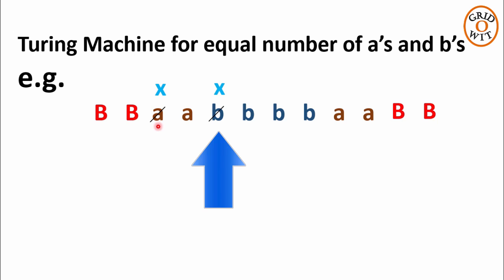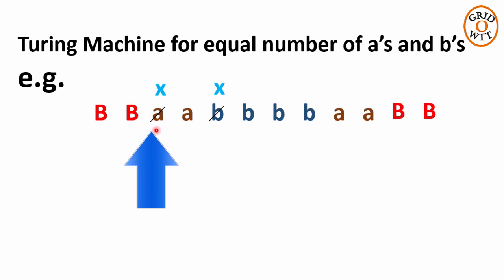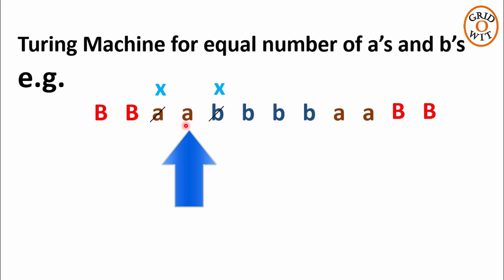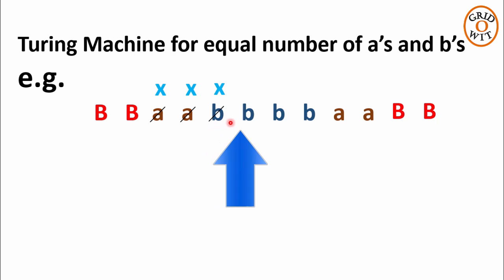The Turing machine will again start the next iteration from the leftmost symbol of the string. Now the Turing machine will skip this X and delete this A, replacing it with X. Now the Turing machine has deleted A, so it will search for B, delete this B and replace it with X. The second iteration is also completed as we have deleted one more pair of AB.